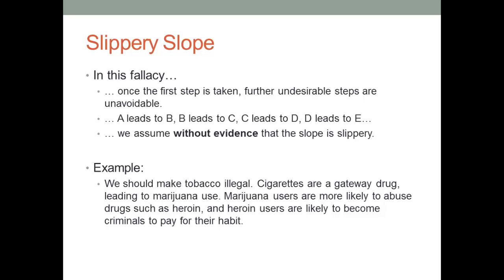Take, for example, this argument for making tobacco illegal: cigarettes are a gateway drug which leads to marijuana use; marijuana users are more likely to abuse other drugs such as heroin; and heroin users are likely to become criminals to pay for their habit. Therefore, smoking cigarettes eventually leads people to become criminals — which is a fallacious argument for making tobacco illegal. Although in some cases cigarettes may lead to marijuana, scientists disagree about this, and it is possible to stop along the way. Smoking a cigarette will not necessarily lead to marijuana, harder drugs, or crime.